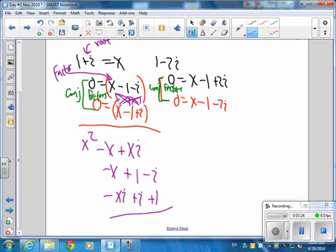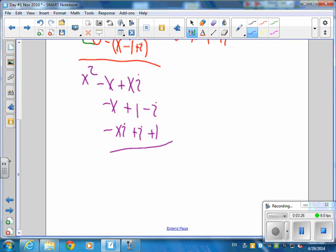When I add all those up, I'm going to get x squared, I'm going to get minus 2x. What happens to the xi's? Why did the xi's cancel?